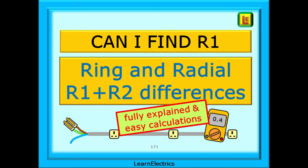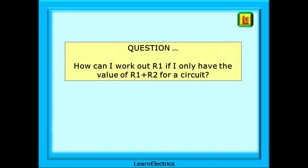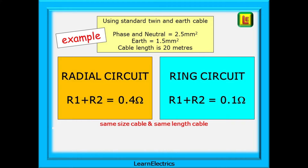In this video from LearnElectrics, we will look at how we can find R1 for a circuit given minimal information, and just what are the differences in R1 and R2 in ring and radial circuits. We've had several requests from people taking electrical assessments asking how they can work out R1 if they only have R1 plus R2 for a circuit. We will use as examples a radial circuit and a ring circuit that are both the same length and both use the same standard twin and earth cable.